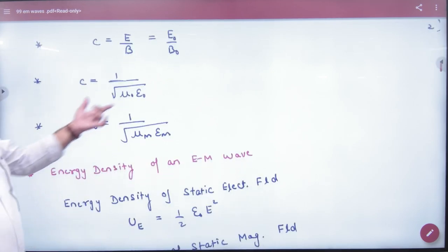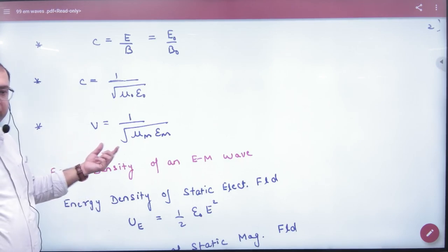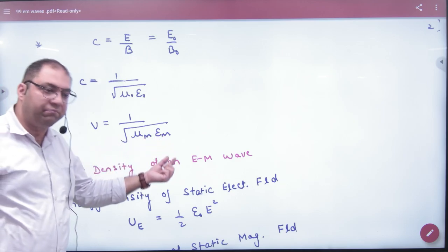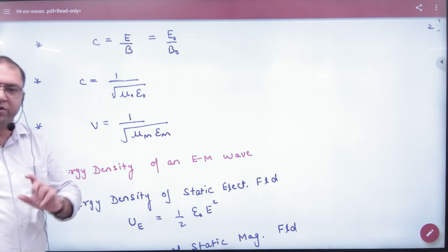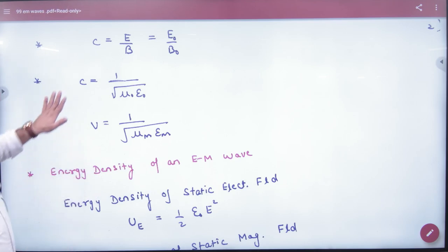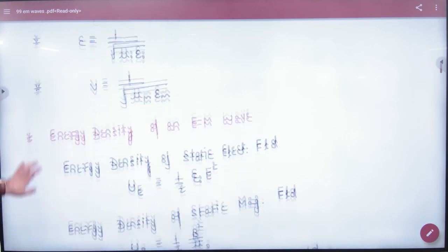Next is, what is C formula: 1 upon √(μ₀ε₀). As for C, what is V formula: 1 upon √(μ_medium × ε_medium), because when the medium changes, the value of μ and ε will change. So this step is also clear here.